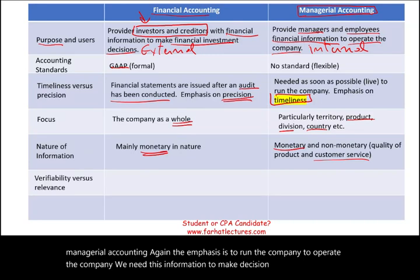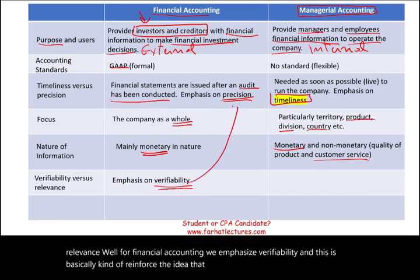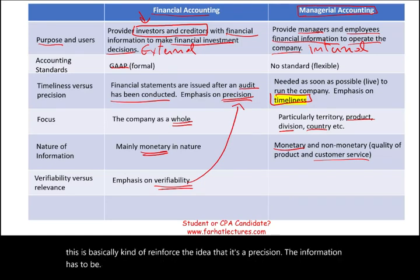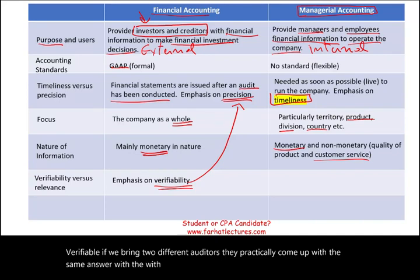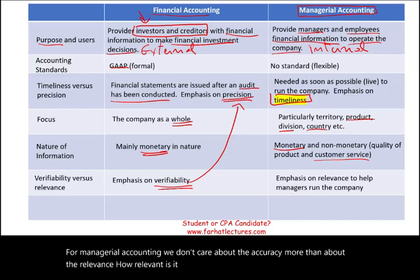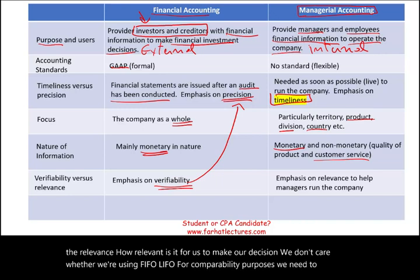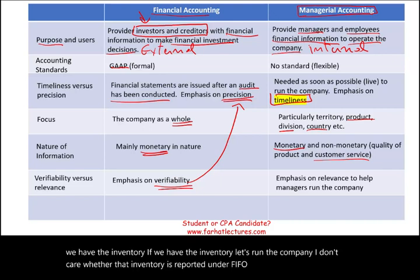Verifiability versus relevance. For financial accounting, we emphasize verifiability — reinforcing the idea of precision. The information has to be verifiable; if two different auditors review it, they should arrive at practically the same answer. For managerial accounting, we care more about relevance than accuracy. We need to know if we have the inventory to run the company. Whether that inventory is reported under FIFO, LIFO, or weighted average is not the concern.